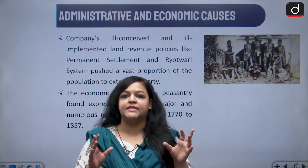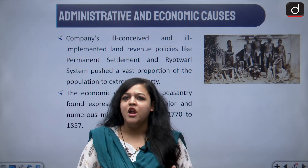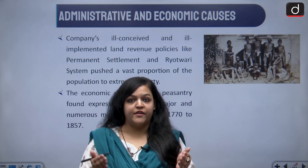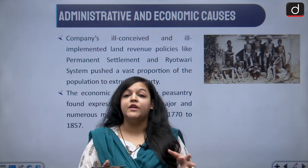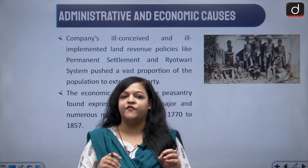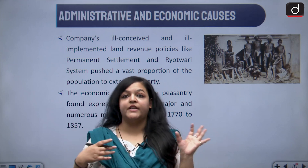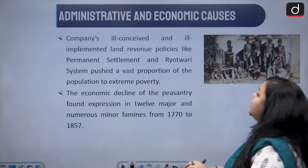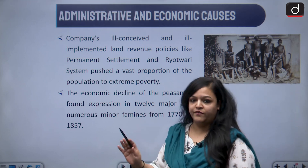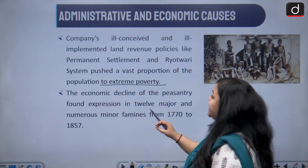Now let us look at the administrative and economic causes. The company's ill-conceived revenue settlements — Permanent, Ryotwari, and others — had a major impact. Fifty to a hundred percent of incomes were being charged as revenue. People became dependent on moneylenders who charged exorbitant interest rates. Whatever the people earned was being taken away by the British, causing the economic decline of the peasantry.